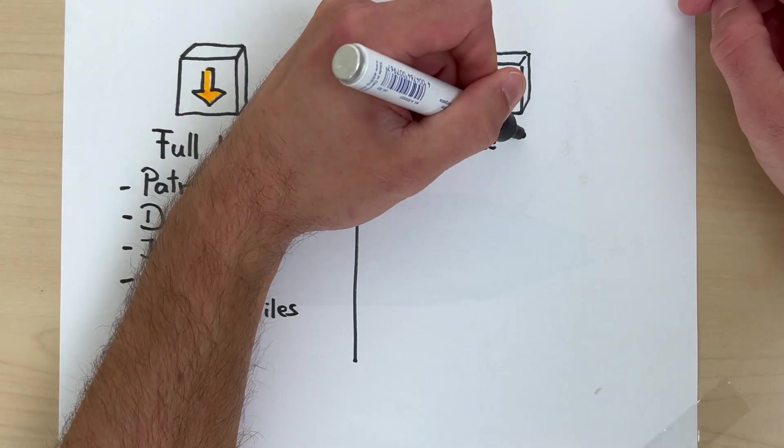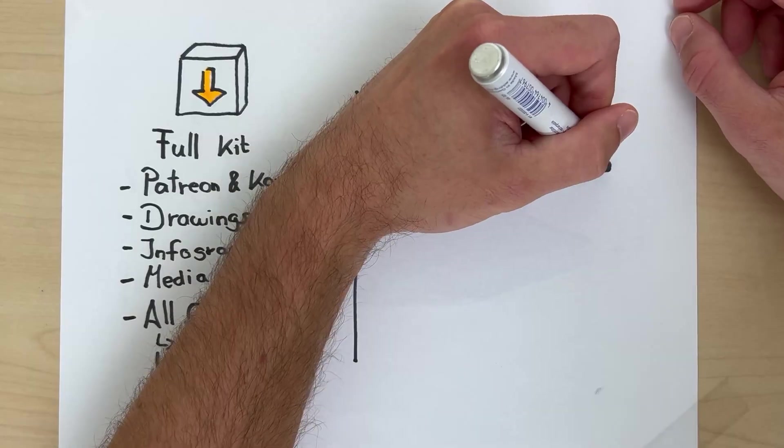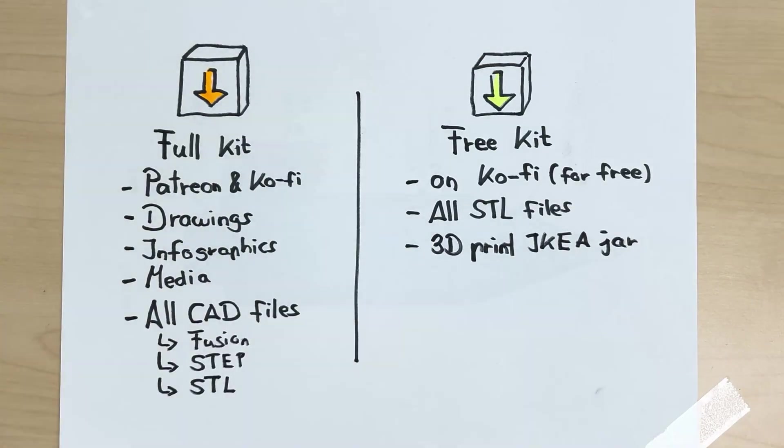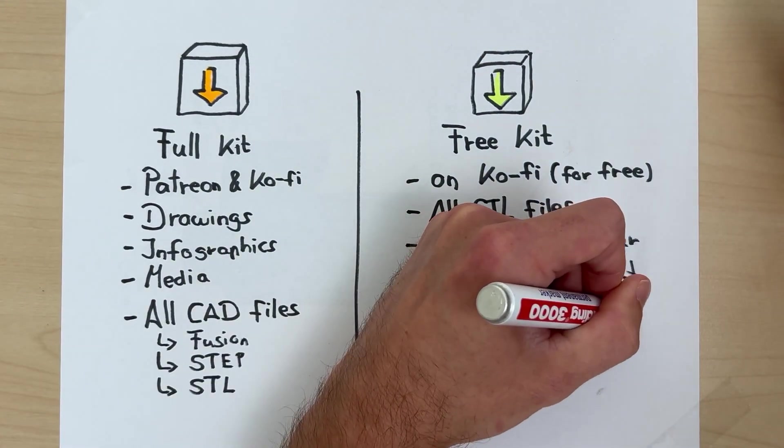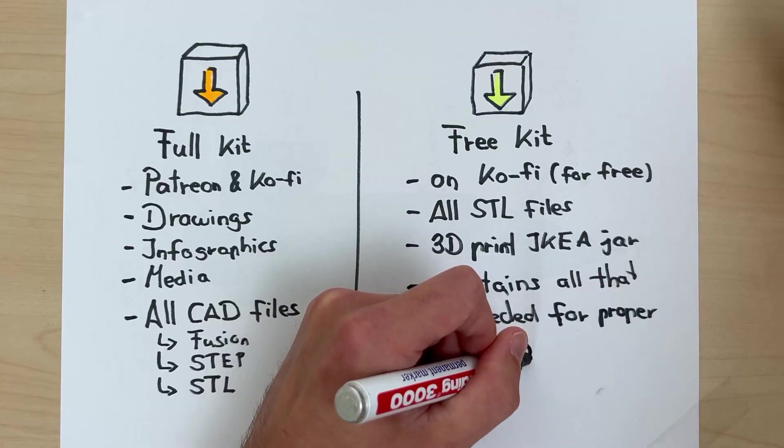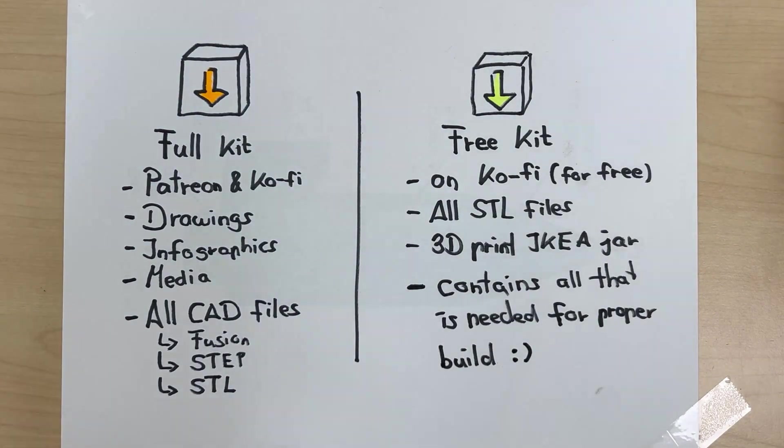It also contains different adapter sizes for vacuum connections and tubing so you can fit it to various hose diameters. And then there's also the free kit available on Ko-fi. It contains the STL files of the latest version from this video and it also includes a 3D printed version of the IKEA jar since not everyone has one of these lying around.